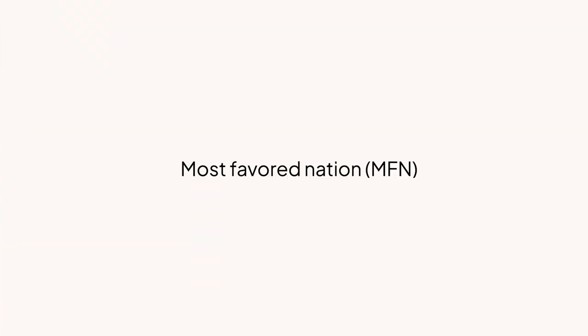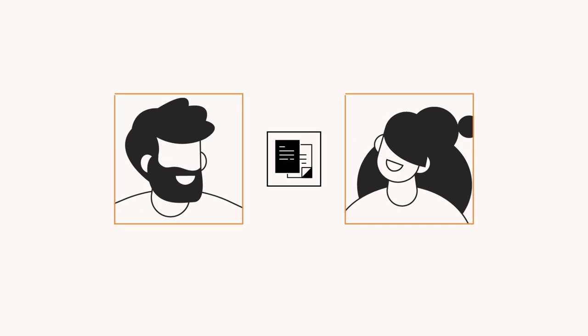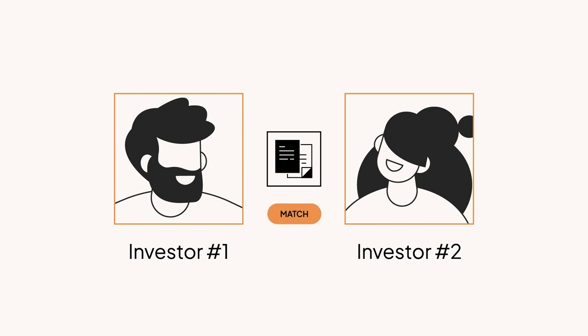That being said, you may run into some nuances. For example, some SAFE investors might ask for a thing called favored nation status. This essentially means that if you talk to a different investor and give them better terms, then the first investor wants their terms to match what you gave to the other person. This can cause some administrative challenges on your cap table and impact your level of dilution.